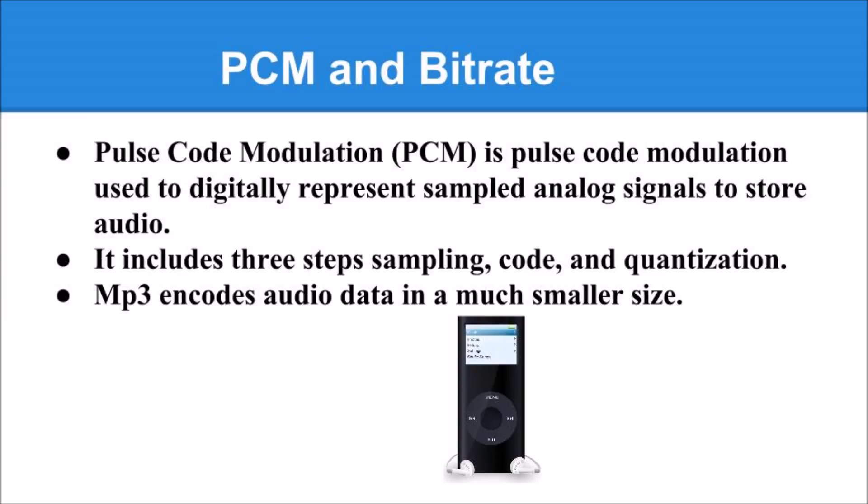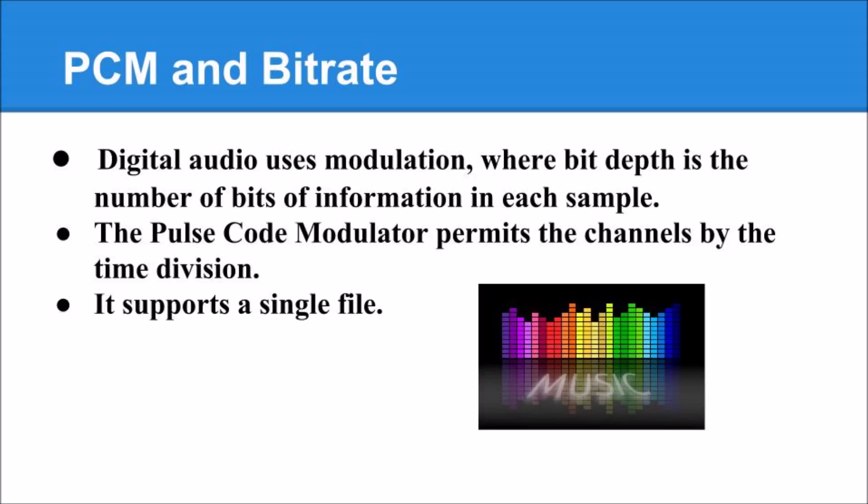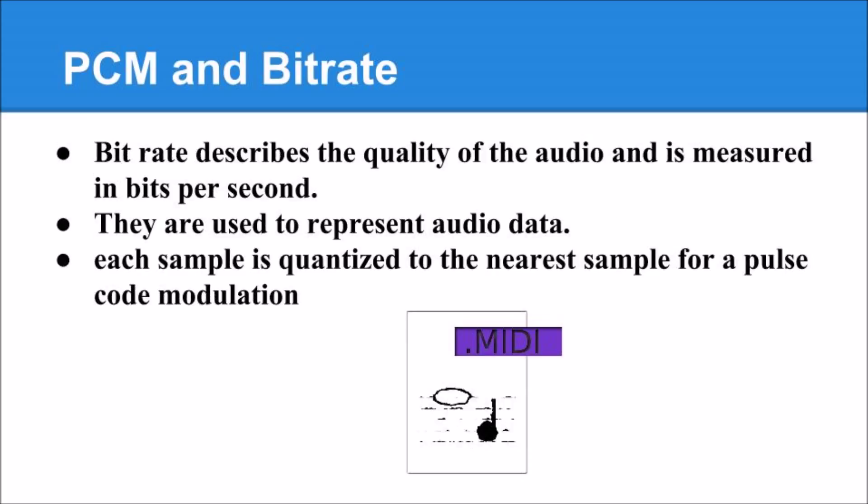MP3 includes audio data in much smaller sizes. It supports a single file and permits the channels by time division. Digital audio uses modulations where bit depth is the number of bytes of information in each sample. Byte rate describes the quality of the audio and is measured in bytes per second. They are used to represent audio data, closest to the nearest sample for pulse code modulation.